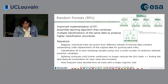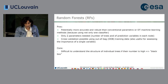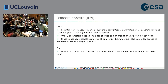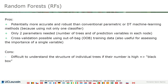One advantage is that you can cross-validate the results, because not all data have been used for training — the data that were not randomly selected can be used for cross-validation, giving you a quick idea of the quality of your algorithm. You can also use this information to identify the discrimination power of the different features you have used.